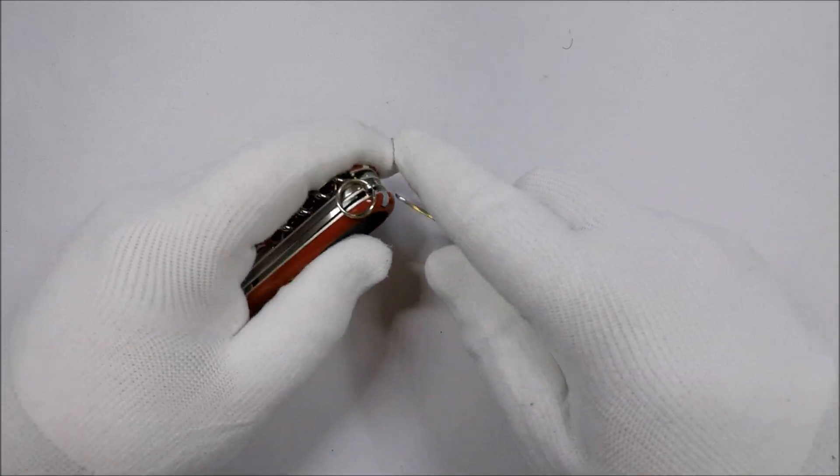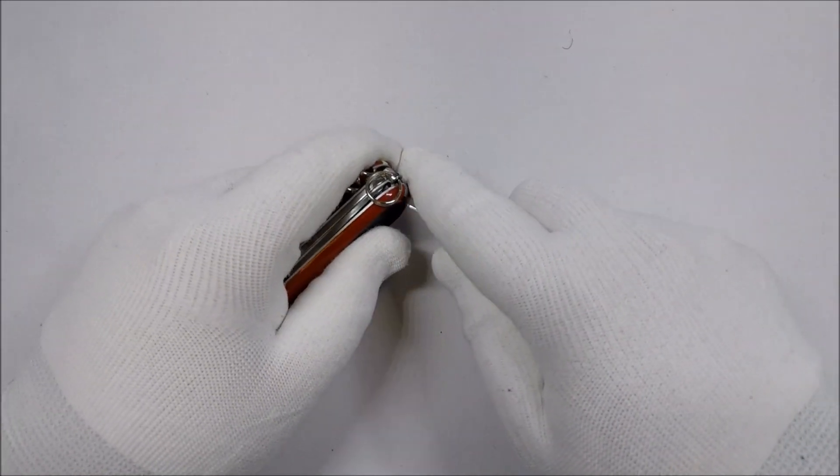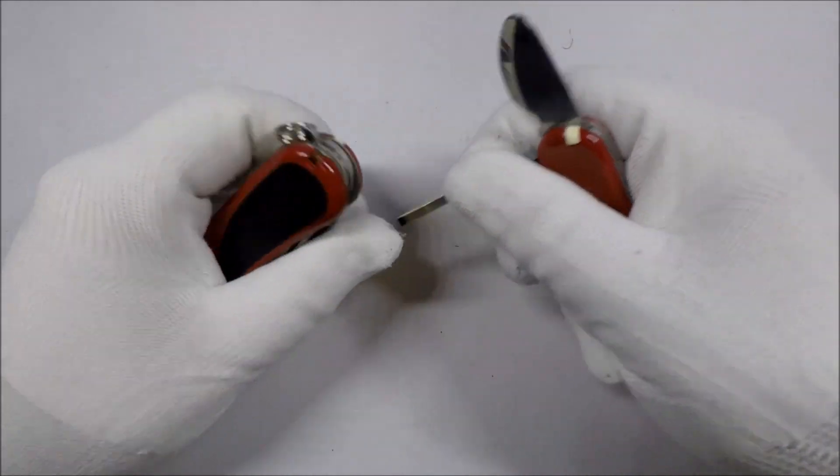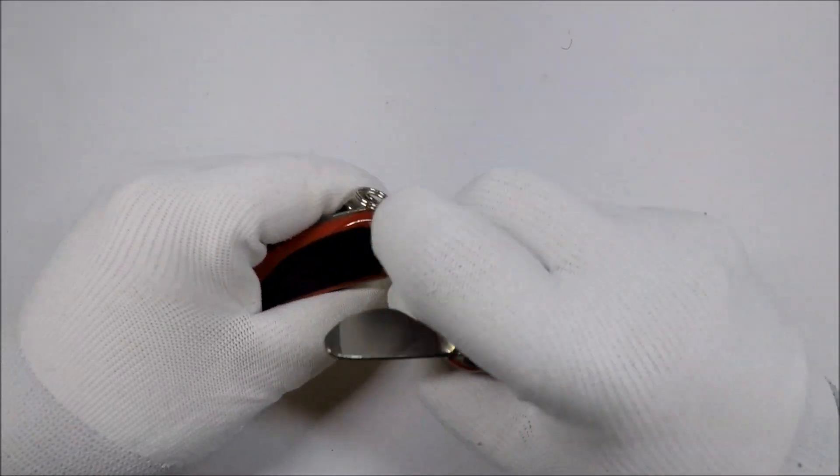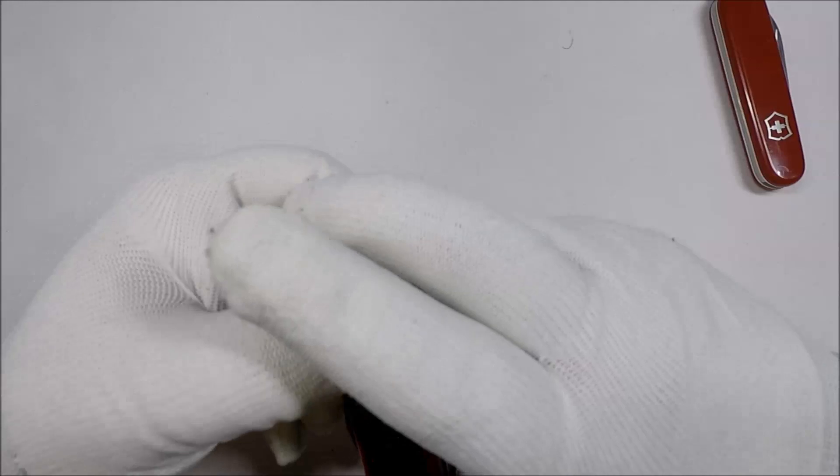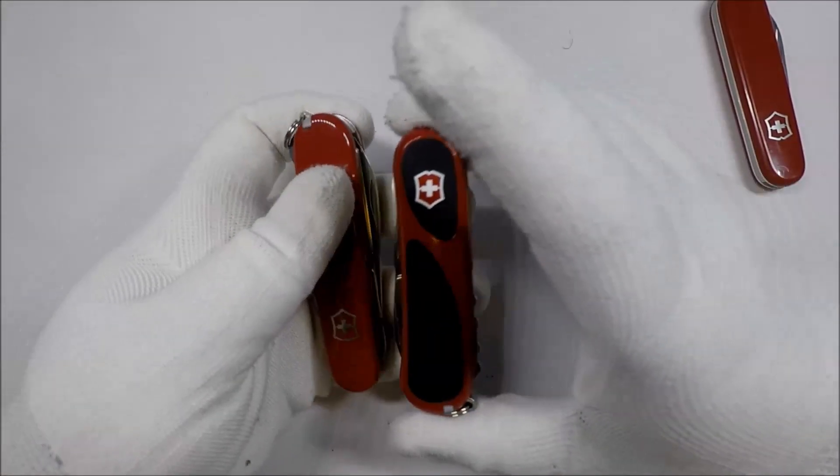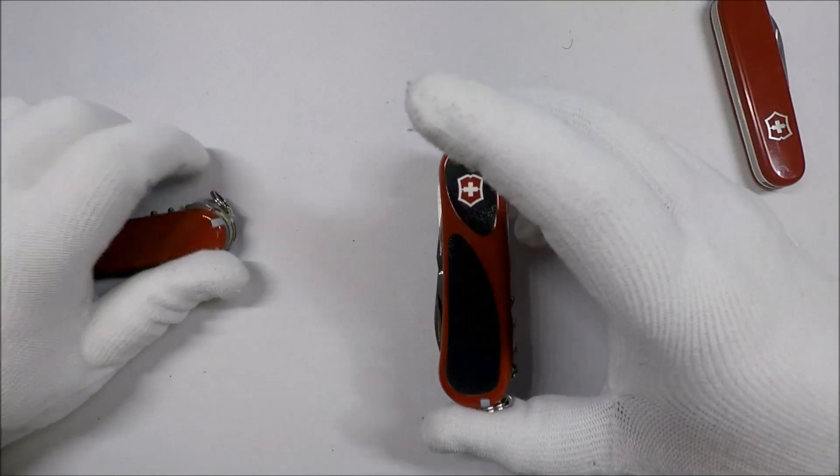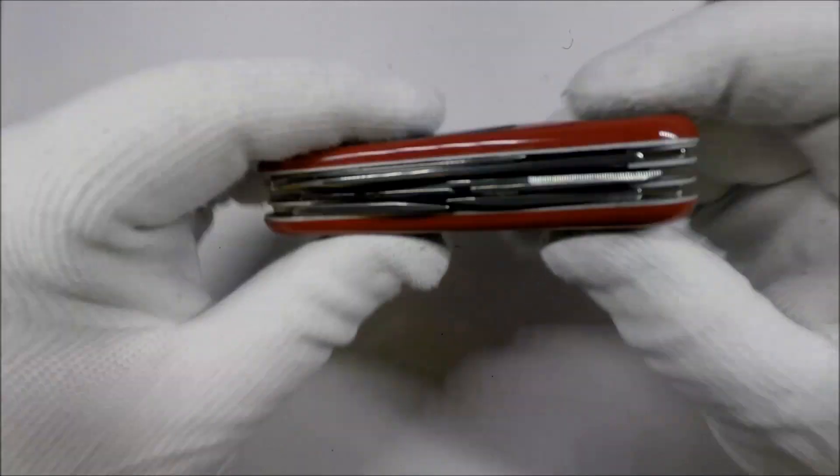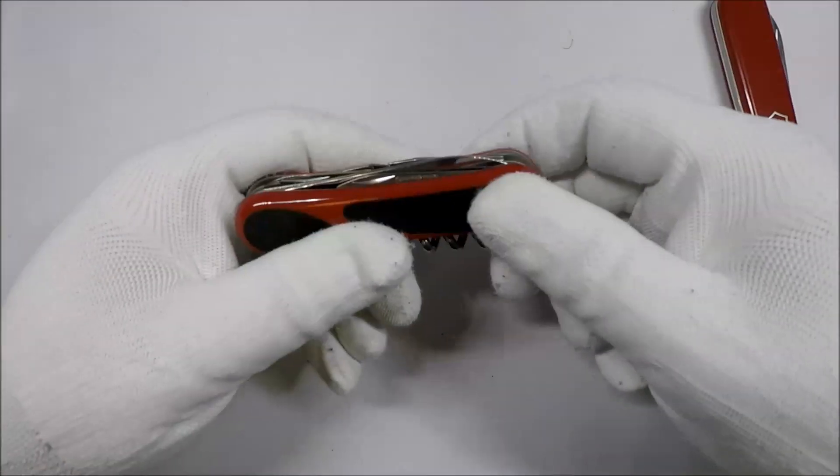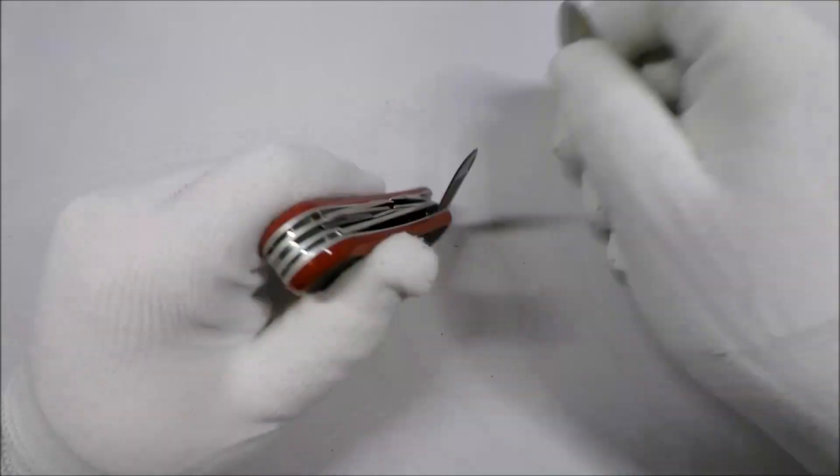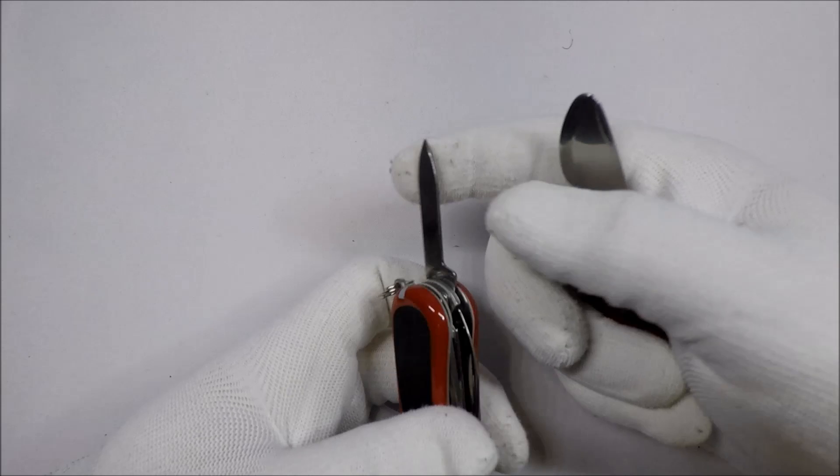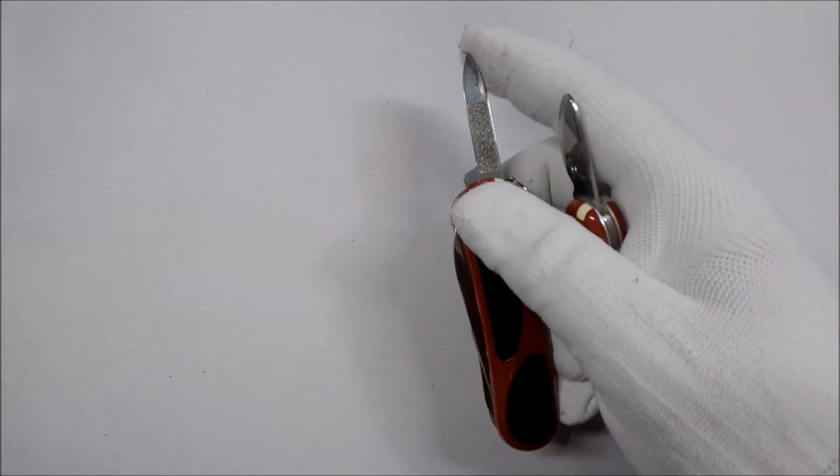It's got toothpick and tweezers. Now this is, I'm pretty sure, the smaller format. This is 85 millimeter versus the usual 91, so it's a little bit more pocket friendly size-wise. You get a nail file, kind of like the Cadet.